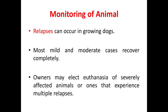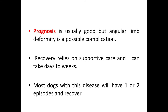Regarding monitoring, relapses can occur in growing dogs. Most mild and moderate cases recover completely; owners may elect euthanasia for severely affected animals or those experiencing multiple relapses. Prognosis is usually good, but angular limb deformity is a possible complication. Recovery relies on supportive care and can take days to weeks. Most dogs with this disease will have one or two episodes and then recover.